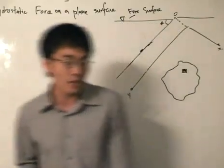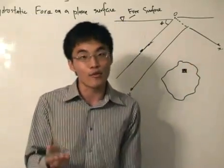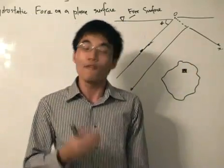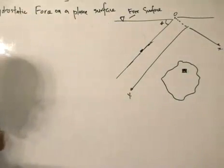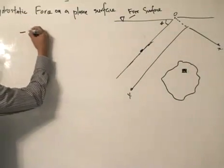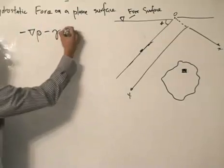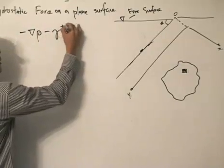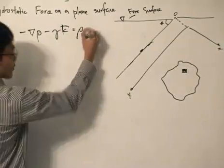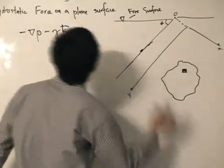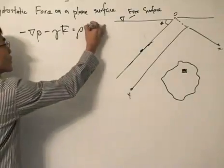So, fluid mechanics — let's just continue. In our previous lesson, we found the pressure gradient for a fluid that is at rest. We got the basic equation for the pressure field, which is: del pressure, take away the specific weight in the K component, and this equals the density times the acceleration. This was the equation that we got.